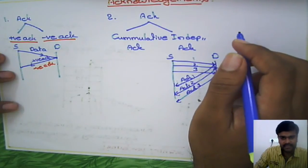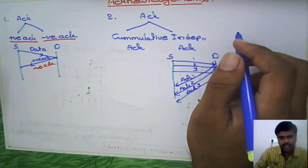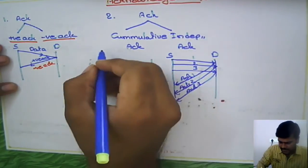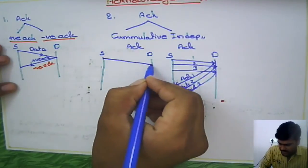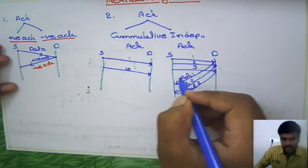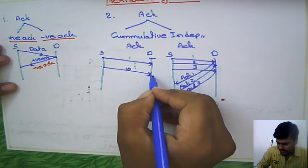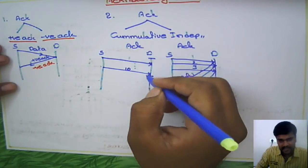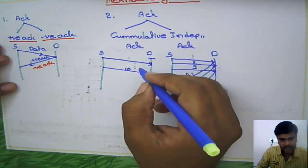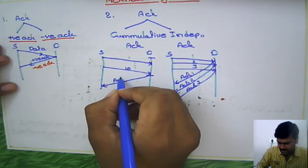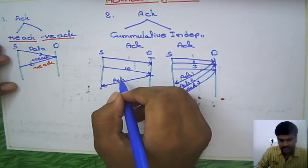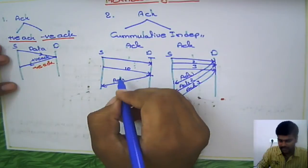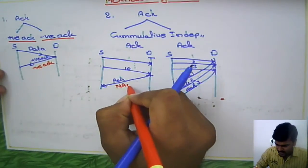In case of independent acknowledgment, for each packet we are going to give one acknowledgment. But in case of cumulative acknowledgment, suppose you transmitted 10 packets in a particular unit of time. At the destination side, for every unit of time, whatever packets it receives, for all those packets altogether it will give only one acknowledgment. This single acknowledgment means it received all the packets. If it did not receive any packet, it will give a negative acknowledgment.